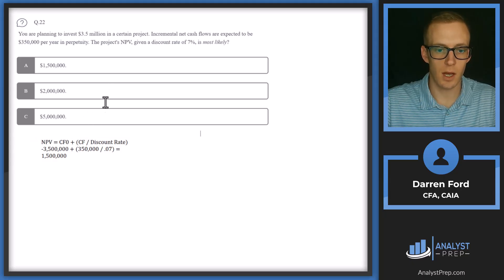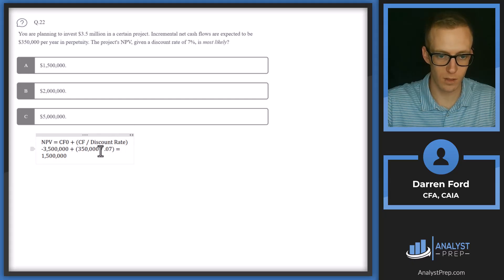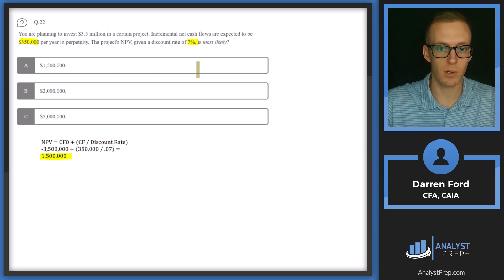For a perpetual cash flow, net present value equals the initial investment (cash flow at zero, which is minus 3.5 million) plus the perpetual cash flow divided by the discount rate. Our cash flow in perpetuity is 350,000 and the discount rate is 7%, so we have 350,000 over 0.07 added to negative 3.5 million, which gives us 1.5 million as the project's NPV — answer A.